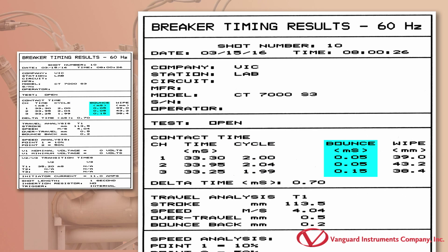The measured contact bounce duration is listed here in milliseconds. The contact wipe distance is measured and printed under the wipe column. The wipe measurement is shown in millimeters or inches depending on the user's preference.